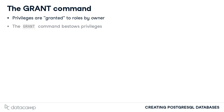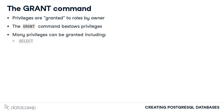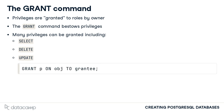This is done using the GRANT command. Some privileges that can be granted include SELECT for reading from a table, DELETE for removing a record from a table, and UPDATE for changing a record in a table. The basic format of the GRANT command is: GRANT p ON obj TO grantee, where privilege p is given to the role grantee for database object obj.